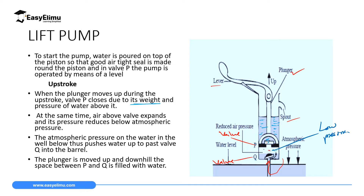During upstroke, you fill the space above valve P with water so it closes valve P. You then create low pressure between valve P and Q by expanding the air inside — when gases occupy more volume, they have low pressure. Atmospheric pressure from outside is very high and forces valve Q to open, so liquid from the well comes through valve Q into the space between P and Q.